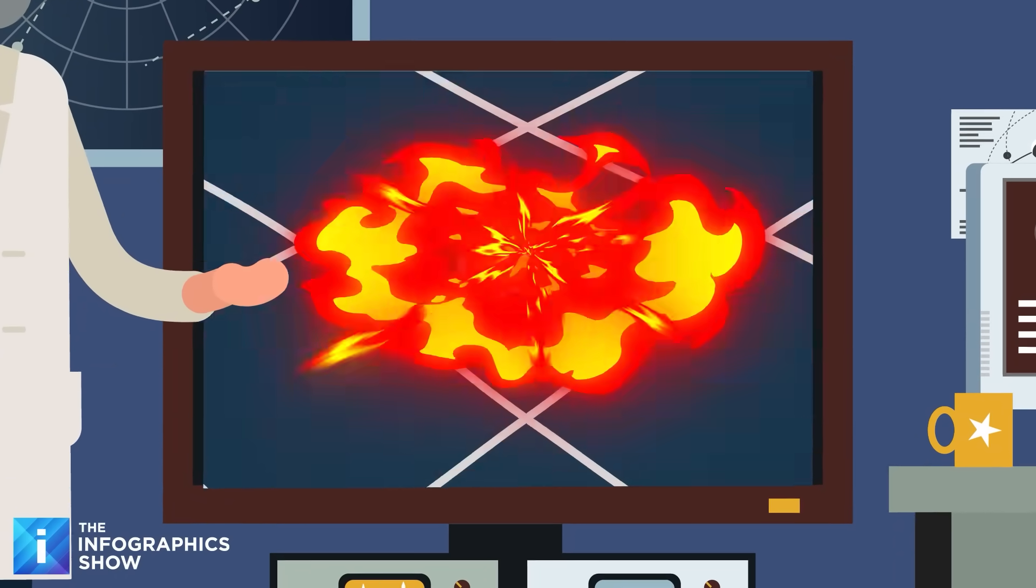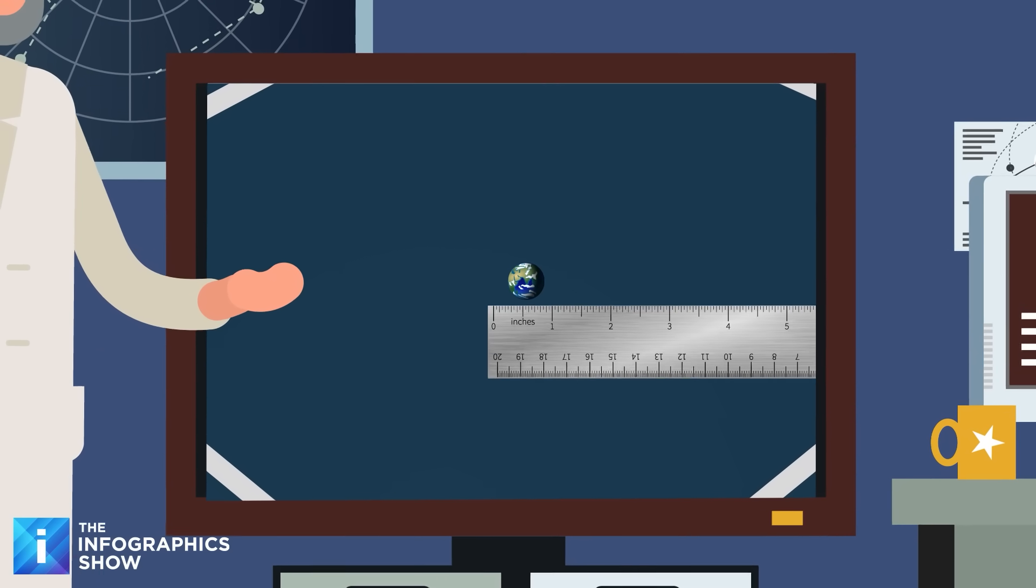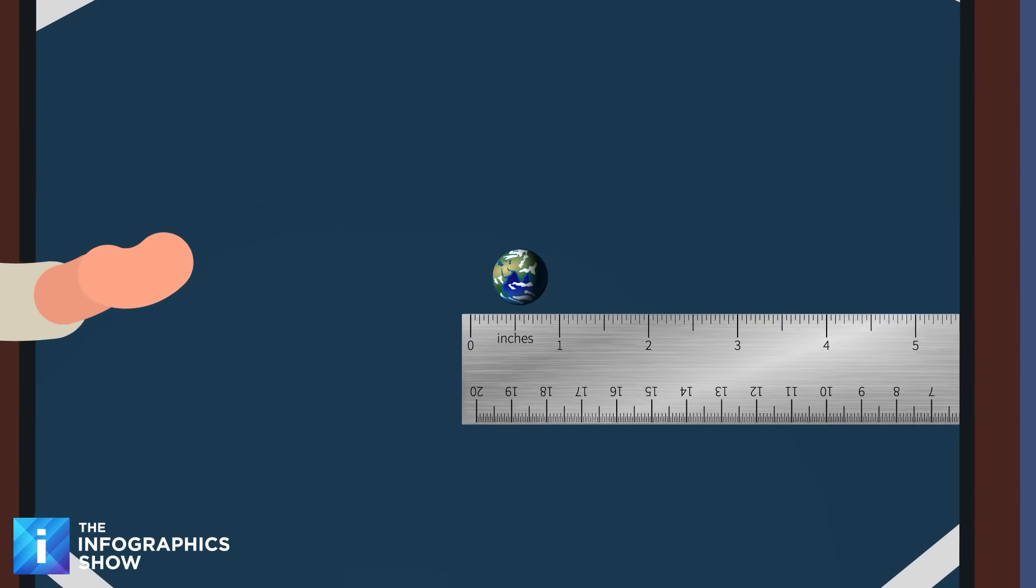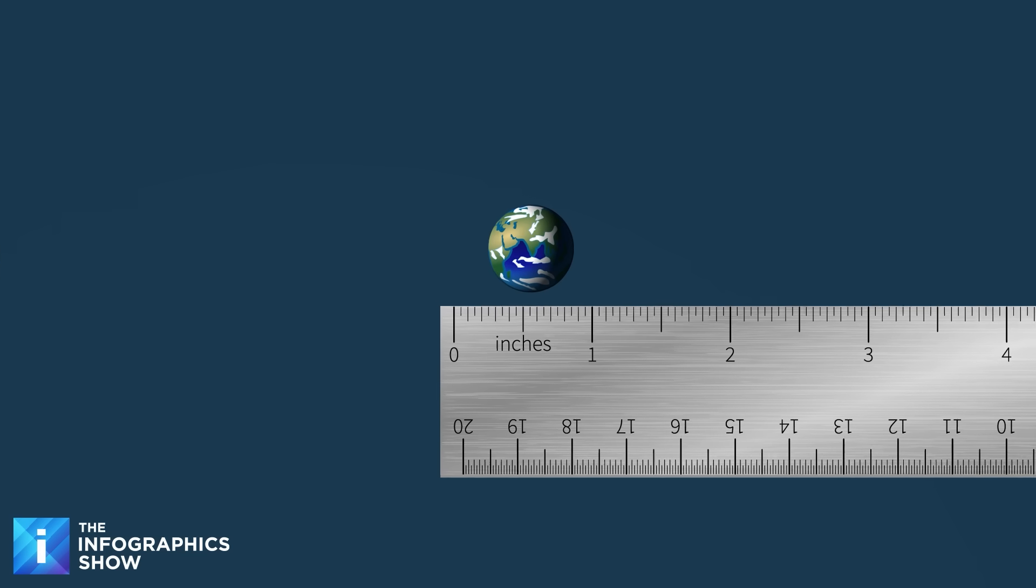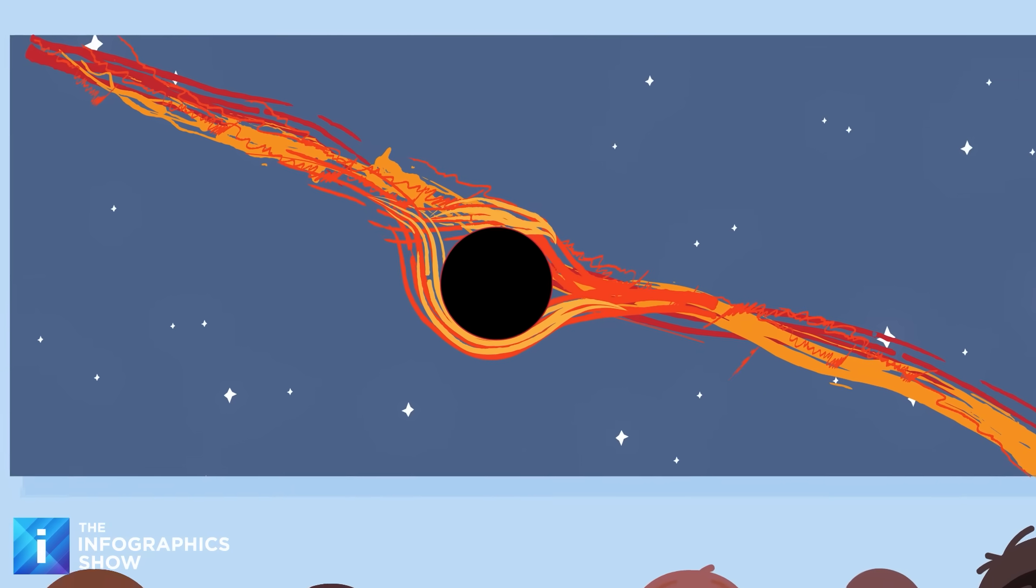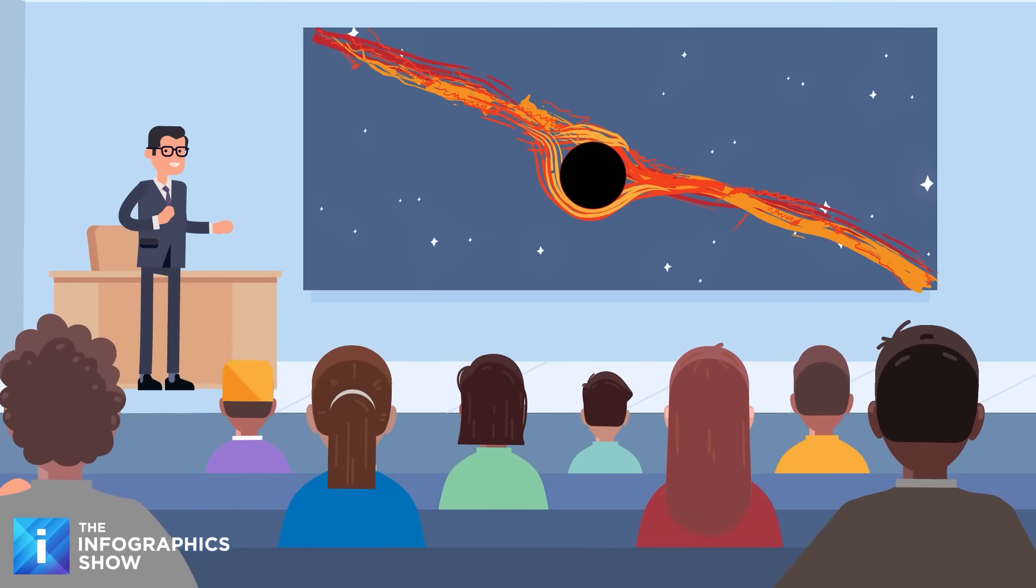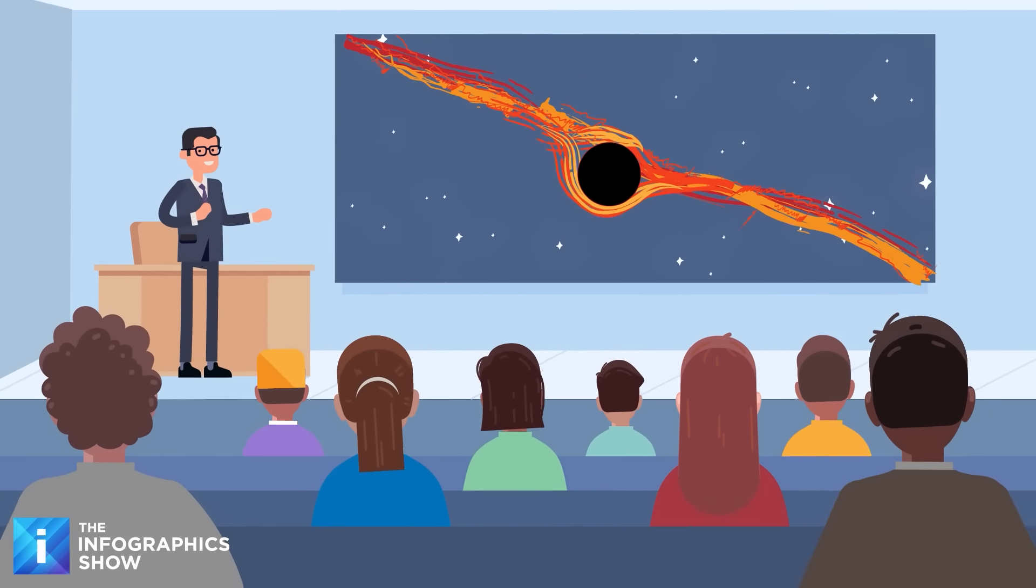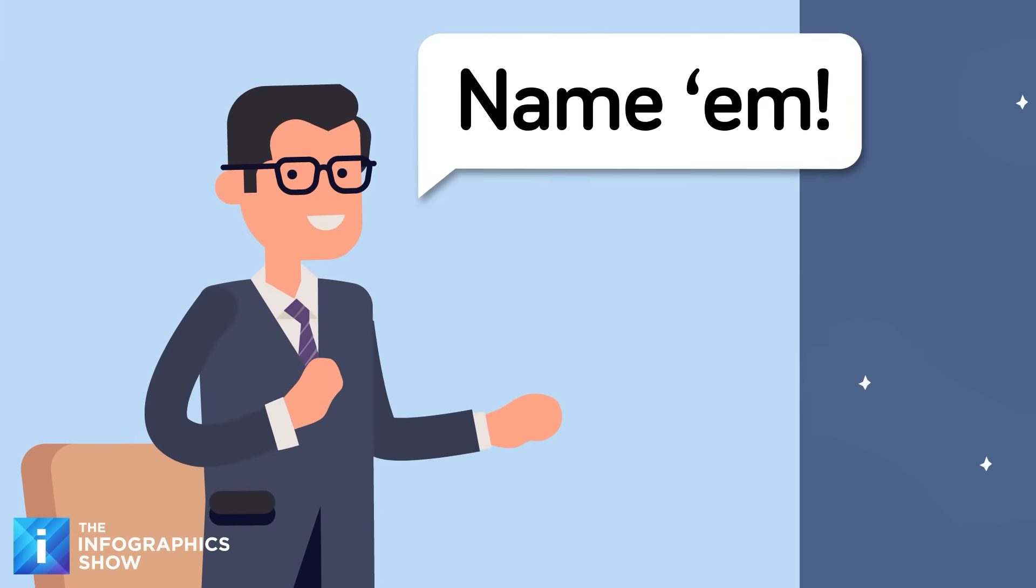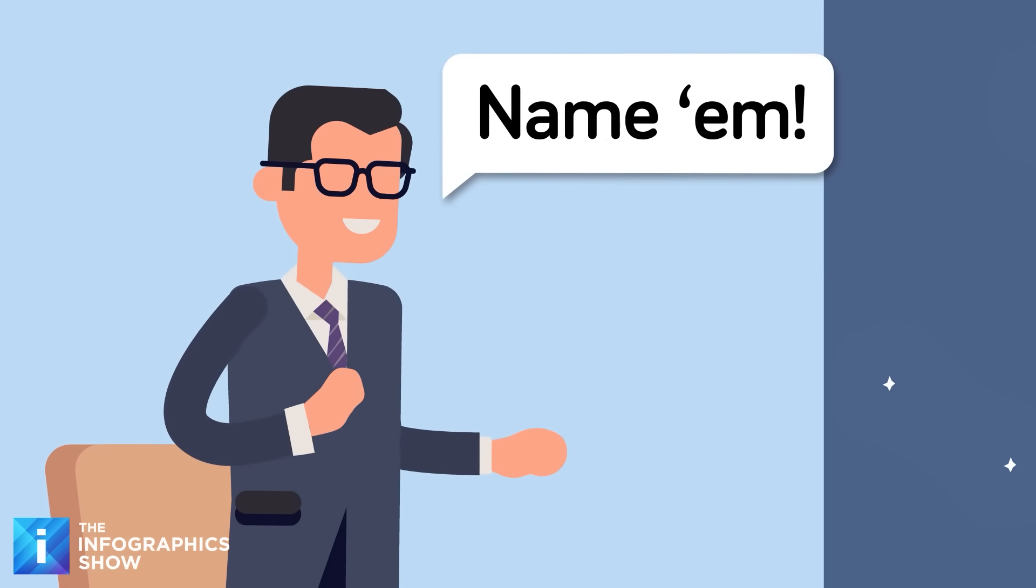If Earth somehow collapsed into a black hole, that event horizon would be less than an inch across. An entire planet's worth of matter, compressed into a sphere smaller than a marble. And here is the most unsettling part. Black holes are completely invisible. They are the ultimate stealth predators. We can only detect them by watching what they do to everything around them. Stars orbiting invisible partners. Matter heating to millions of degrees before vanishing forever into the void.